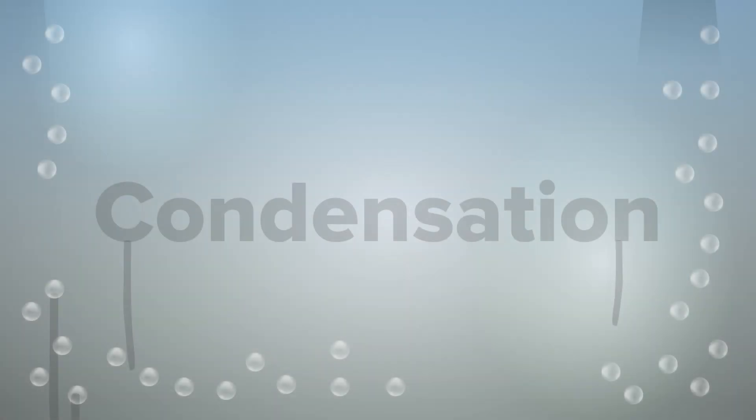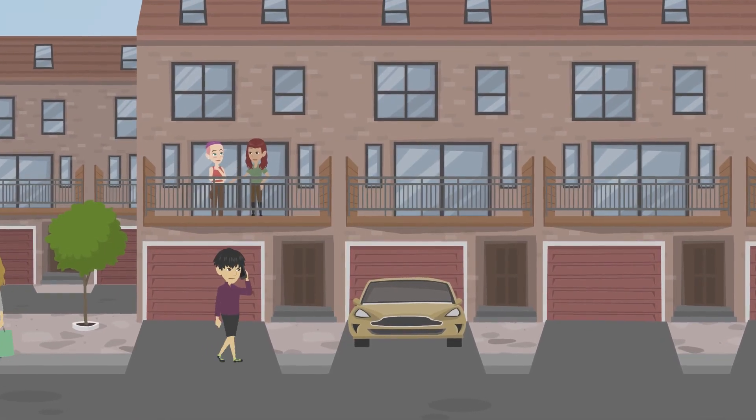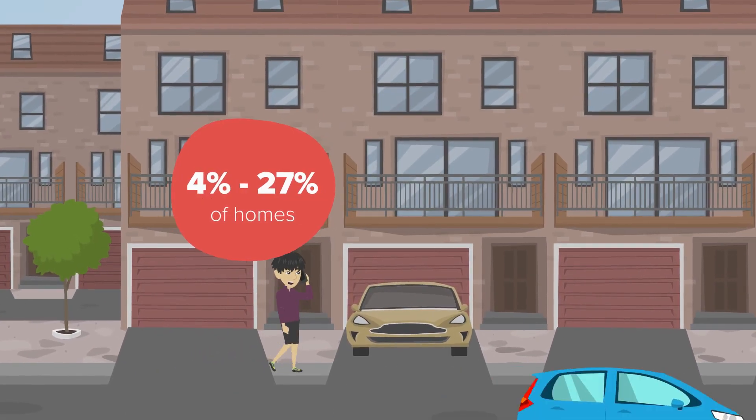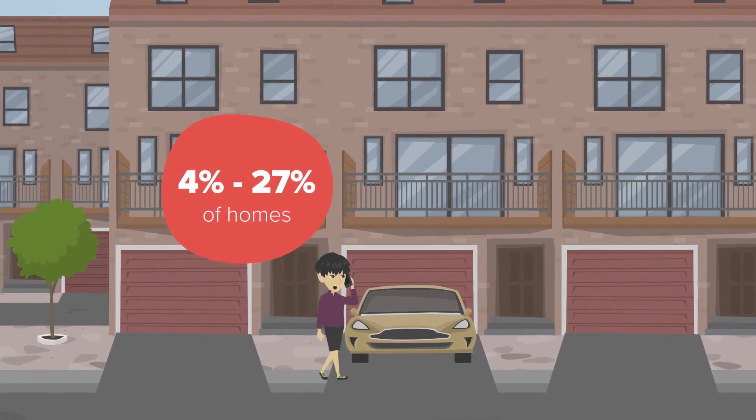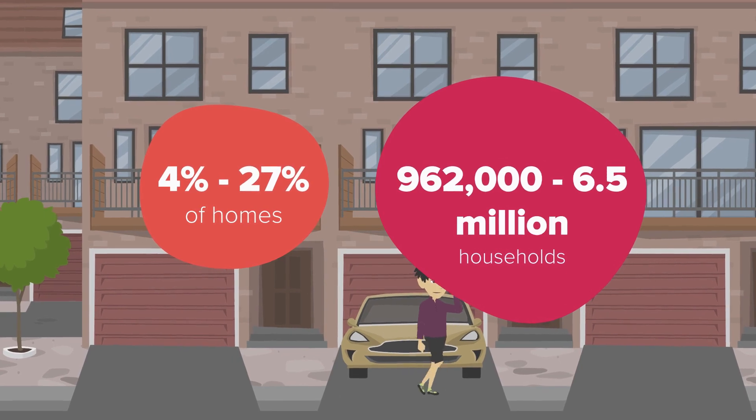This is known as condensation, and the UK government estimates that homes affected by damp and mould range from 4 to 27% of homes, or equivalent to 962,000 to 6.5 million households.